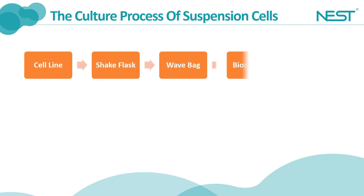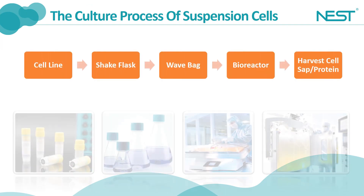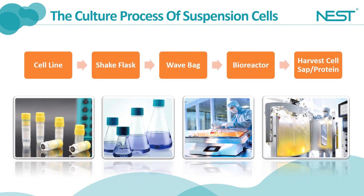First, let's have a look at the culture process of suspension cells. Starting from a cell line, first is cell recovery, followed by transfection, the aim of which is to implant the required exogenous genes into the cells to enable the cells to steadily express the required proteins.